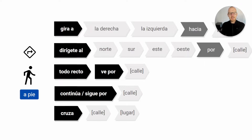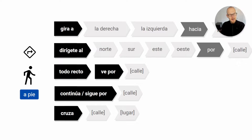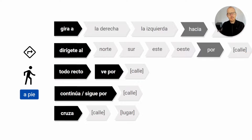And lastly, you can also hear cruzar — to cross. So you can say: cruza la calle Alcalá — cross Alcalá Street — or cruza el parque — cross the park. That's the verb cruzar.